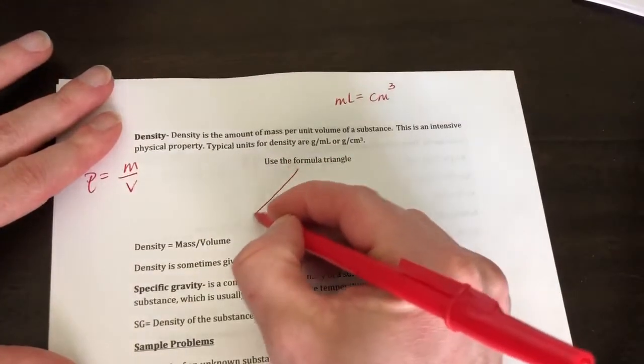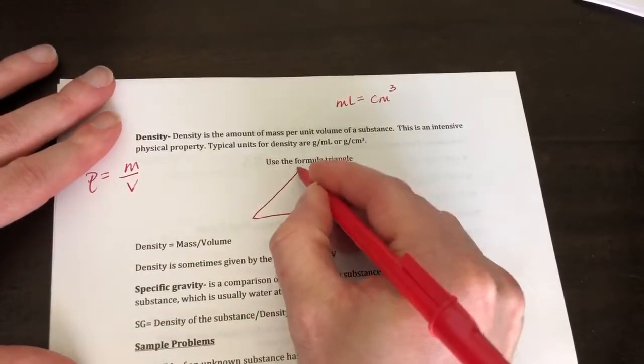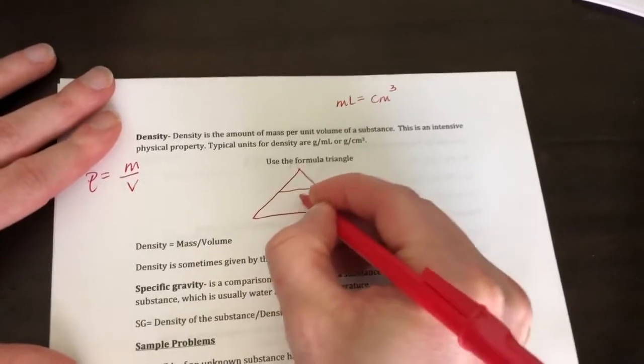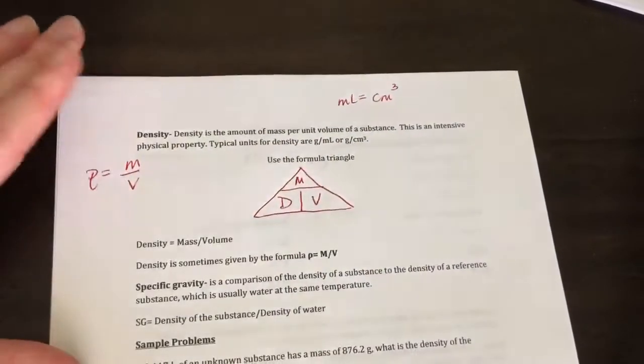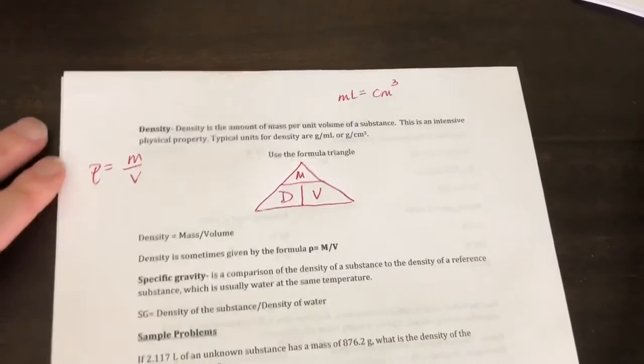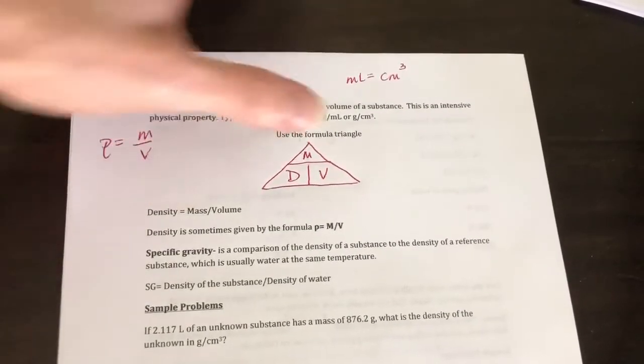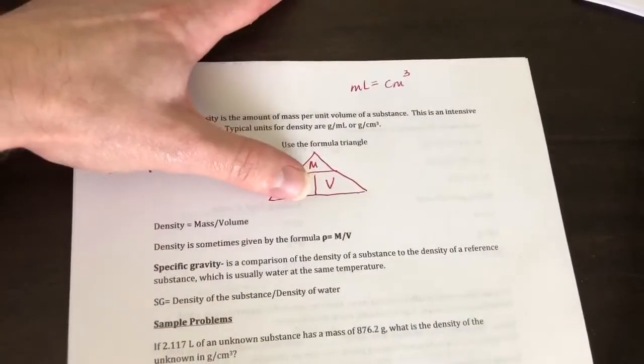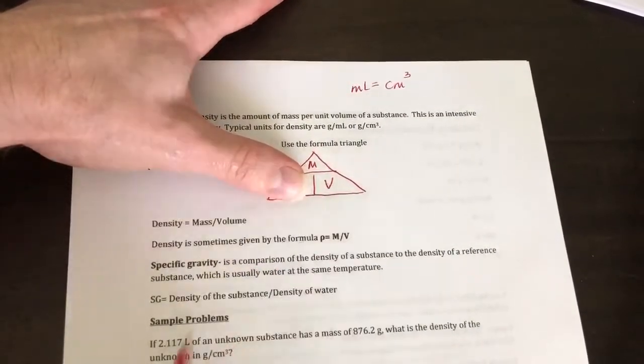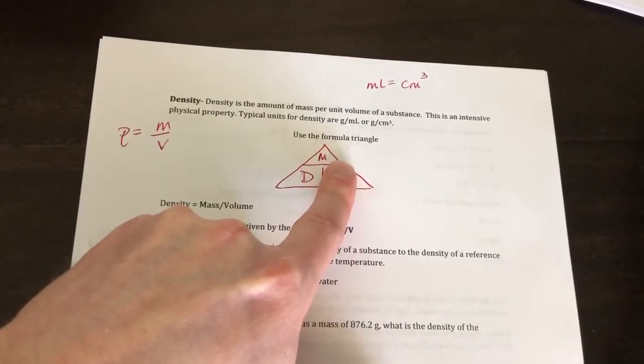Now I'm going to show you a little formula triangle that works really, really good for when we're working these problems out. It's called the MDV triangle. Okay, so this is how it works. If I'm looking for mass, I cover up mass and I get density times volume. If I'm looking for density, it's mass over volume. If I'm looking for volume, it's mass over density.